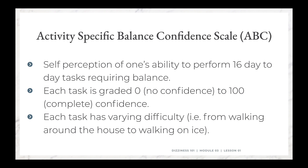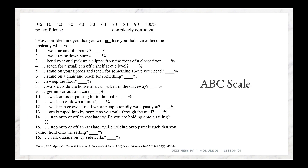If we pull it out, you can see there are 16 questions and at the top there's a scale of 0 to 100. The question prompt is: 'How confident are you that you do not lose your balance or become unsteady when you...' Question 1 is 'walk around the house,' question 5 is 'stand on tiptoes and reach for something above your head,' question 10 is 'walk across a parking lot to the mall,' and question 15 is 'step on to or off an escalator while holding parcels such that you cannot hold on to the railing.'